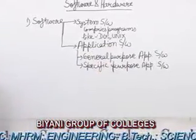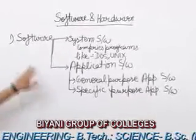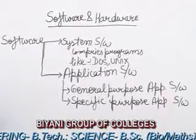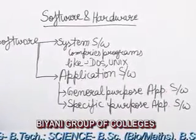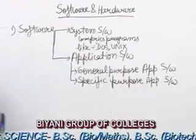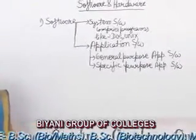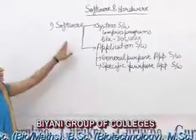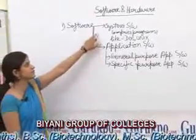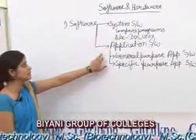First of all, I will define software. Software is a set of programs that are used in a computer. Software has two types: first is system software, second is application software.